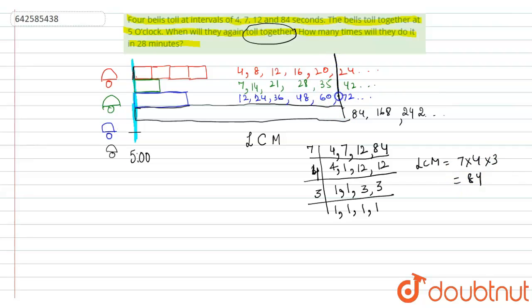So now that means they will ring together after every 84 seconds. Now, if I want to tell at what time they will ring together for the first time after 5 o'clock: 84 seconds, if I split it into 60 seconds and 24 seconds, then I can say 60 seconds is 1 minute. So it will ring after 1 minute 24 seconds. So they will ring together at 5:01 and 24 seconds.